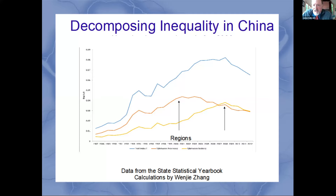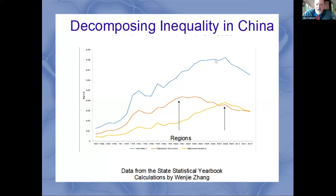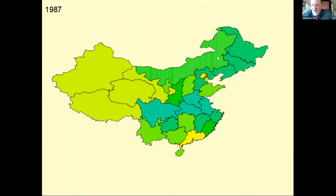The differences: this doesn't cost anything to compute, we have it for every year, and we can calculate it within minutes of receiving the data from the State Statistical Yearbook — rather than waiting years to collect and collate surveys. A further advantage is that you can actually map out where the inequality is affecting the country and how it's playing out across the surface of the country — just to give you a difference of a decade from 1987 to 1997.